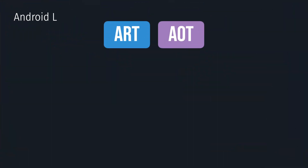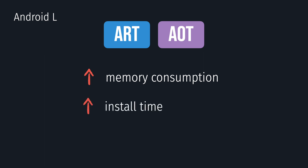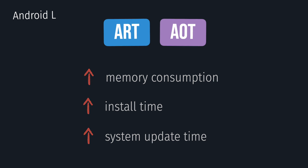But this approach also has some drawbacks. ART in Android L used a lot more RAM than Dalvik. Another drawback of AOT is that it took more time to install the app, since after downloading the APK the whole app needed to be transformed to machine code. It also took longer to perform system updates, because all apps needed to be re-optimized. And the reality is that most parts of our apps are very rarely used by our users, so having the whole APK pre-compiled almost never pays off.